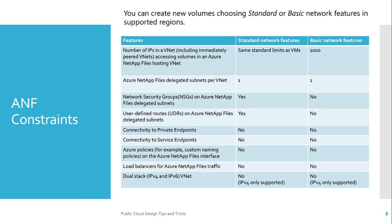Now for ANF network constraints — specifically network-level constraints. You can create new volumes choosing between two types: basic or standard network features. An important point is that inside a virtual network you can have only one ANF delegated subnet. Network Security Groups and the ANF delegated subnet are only possible with standard network features, not with basic. User Defined Routes are also only possible with standard, not basic. Connectivity with private endpoints, service endpoints, Azure policies, load balancing, and dual-stack are not possible with either feature type. Be careful when designing your ANF with your virtual networks.